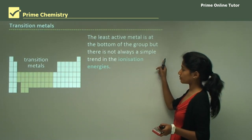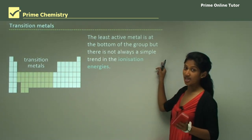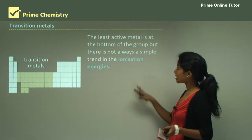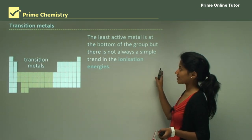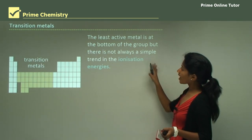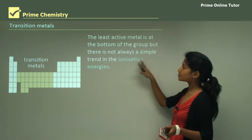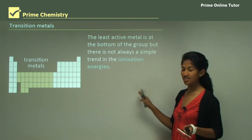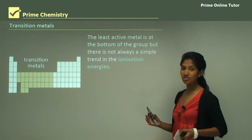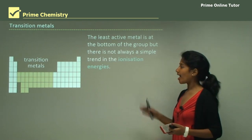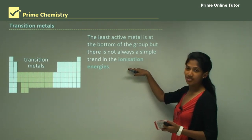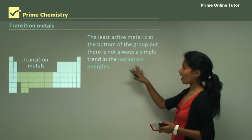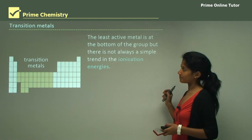Transition metals are a different case. The least reactive metal is at the bottom of the group — around gold and silver. There is not always a simple trend in the ionization energies of transition metals, so we cannot simply link ionization energy to reactivity for them.